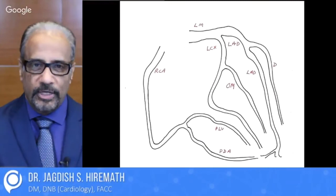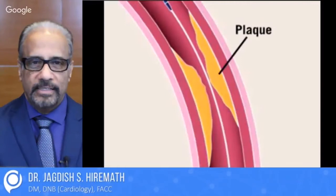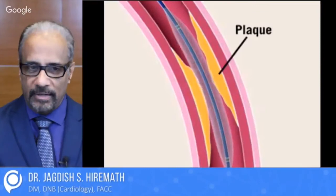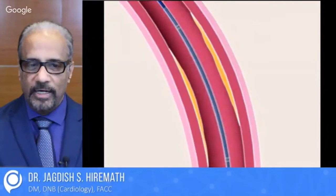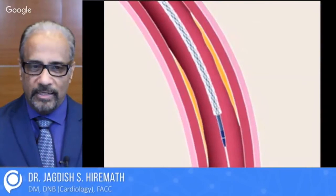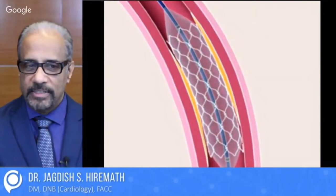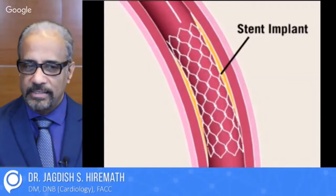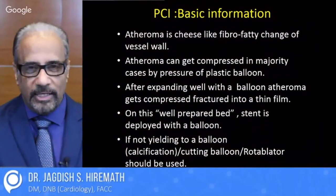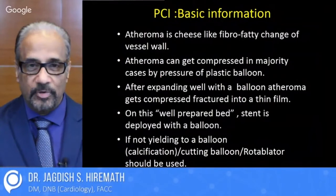This is how angioplasty takes place. There is a plaque; a wire is passed through that — the wire is 0.014 inch. The balloon expands and compresses the plaque to the side. The balloon is then removed and on the same wire comes in a stent and balloon assembly. The balloon expands, leaves the stent behind under high pressure. Stent implantation is complete and that is how angioplasty gets done. The atheroma — the plaque — is like a cheese, a little tougher. It's a fibro-fatty substance and it can get compressed to the side by the plastic balloon that we use.